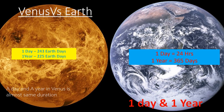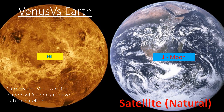For the day and year comparison: one day on Venus equals 243 Earth days, while Earth's day is just 24 hours. One year on Venus is 225 Earth days, compared to 365 days on Earth — meaning a day and a year on Venus are almost the same duration. Regarding satellites, Venus has no satellites, while Earth has one natural satellite, our Moon. Mercury and Venus are the only planets without satellites.